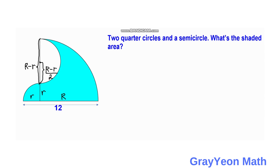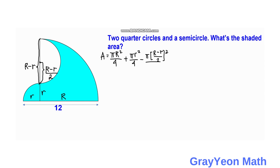Next, we write the formula for the area of this figure. The area equals pi times R squared over 4 for the larger quarter circle, plus pi times r squared over 4 for the smaller quarter circle, minus pi times (R minus r) over 2, all squared and divided by 2, because it is a semicircle.